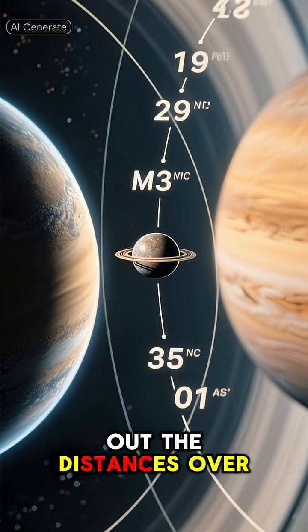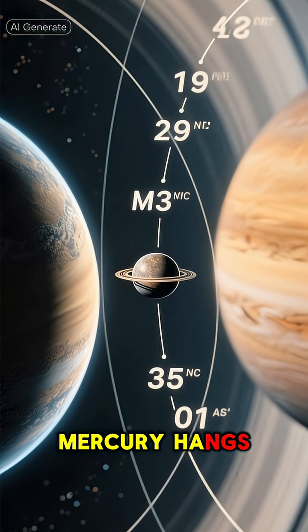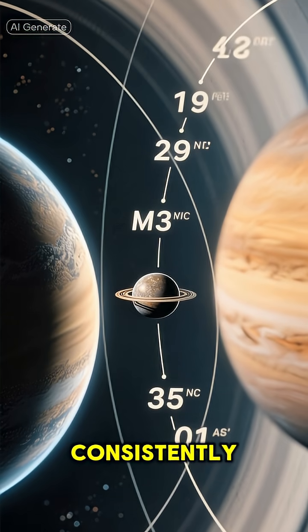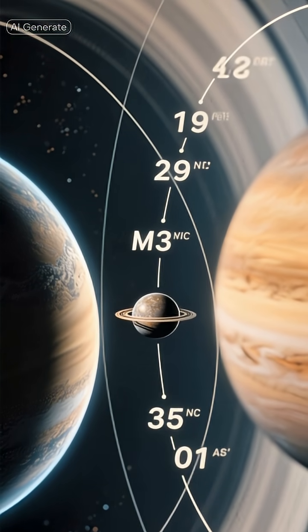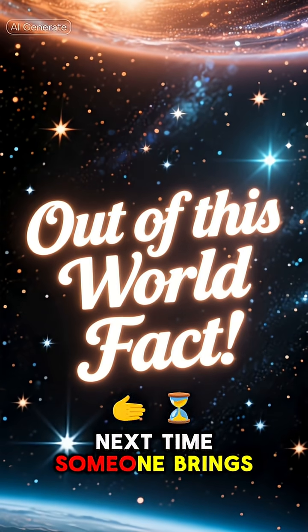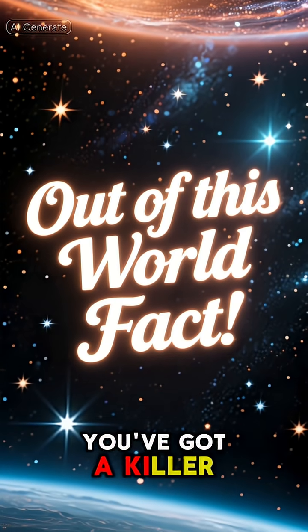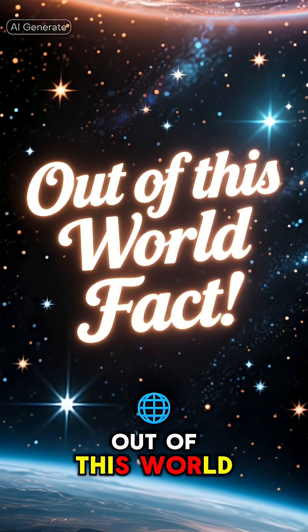When you average out the distances over time, Mercury hangs out closer to Earth more consistently than any other planet. So, next time someone brings up space trivia, you've got a killer fact that's out of this world.